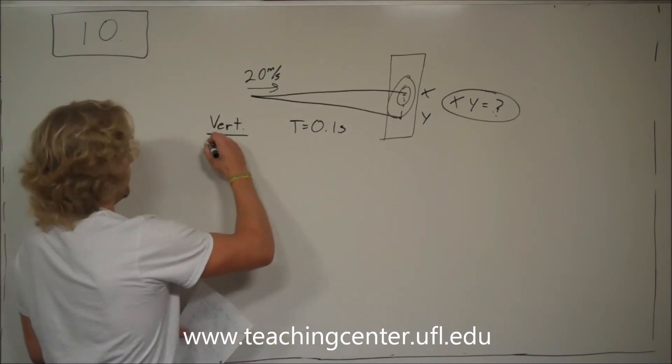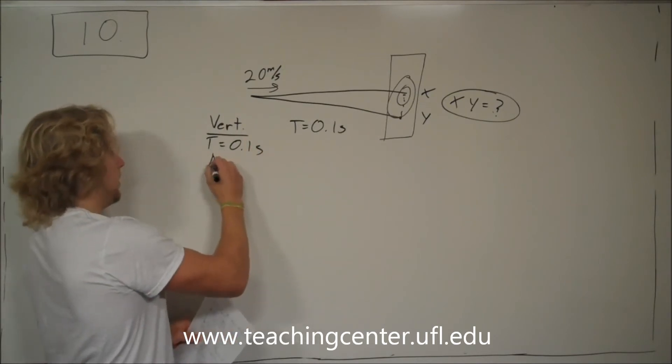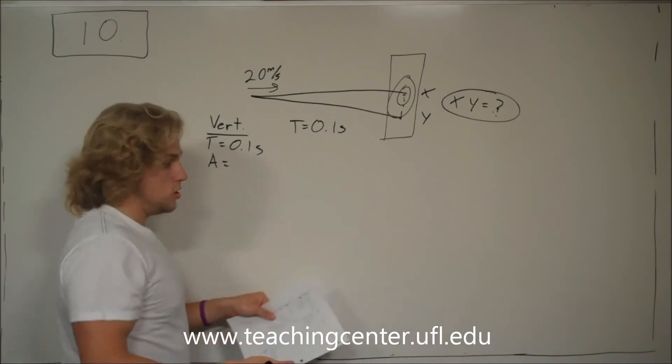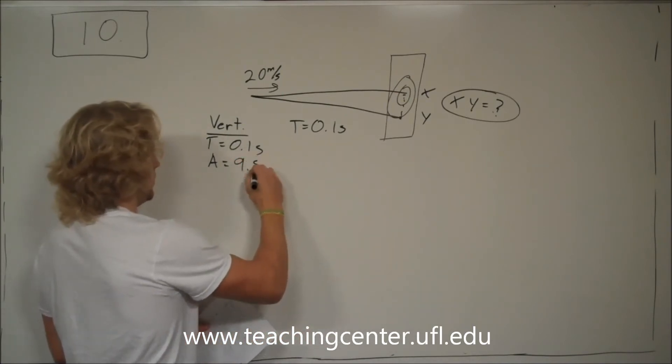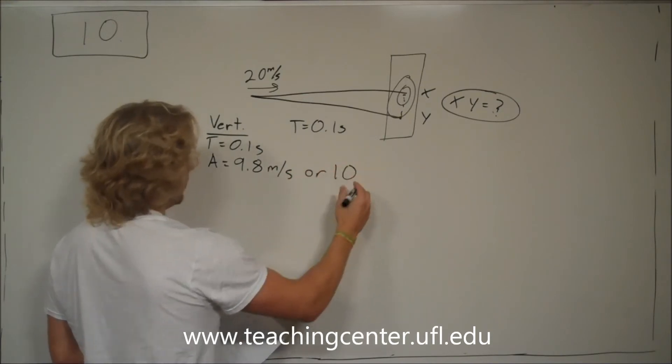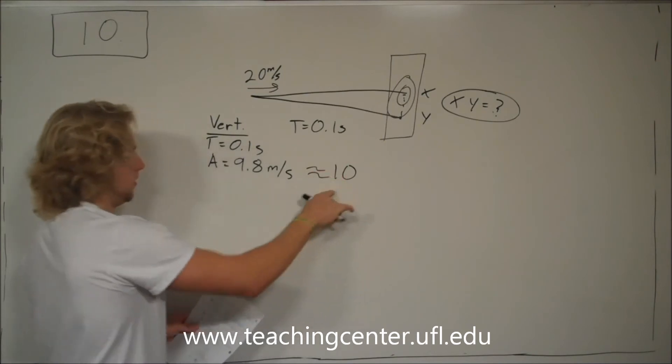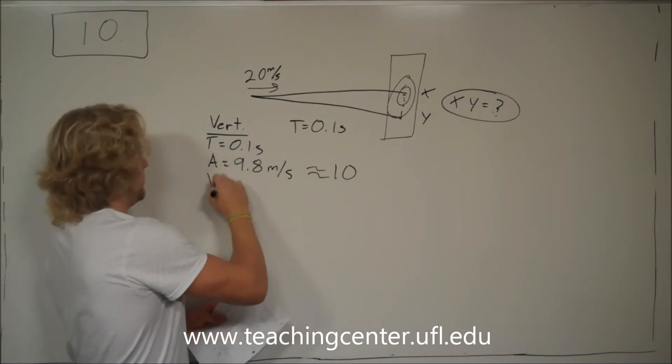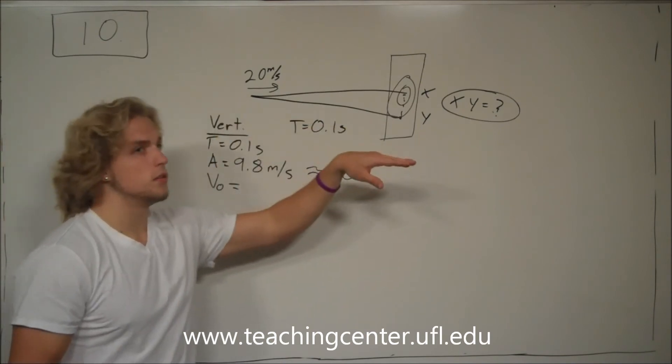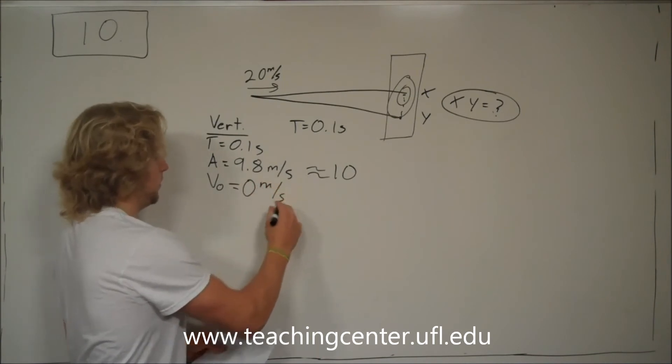You have the time, this is equal to 0.1 seconds. We know that gravity in vertical components, since we're on Earth, it's always going to be g, which is 9.8 meters per second squared, or 10, which is equal to about 10. Then we have v-naught, the starting velocity. If it's only going horizontally at the start, that means vertically, it has no velocity at the start.